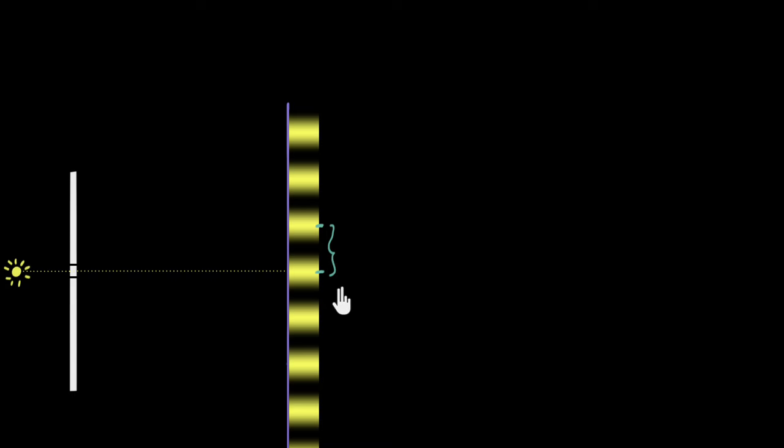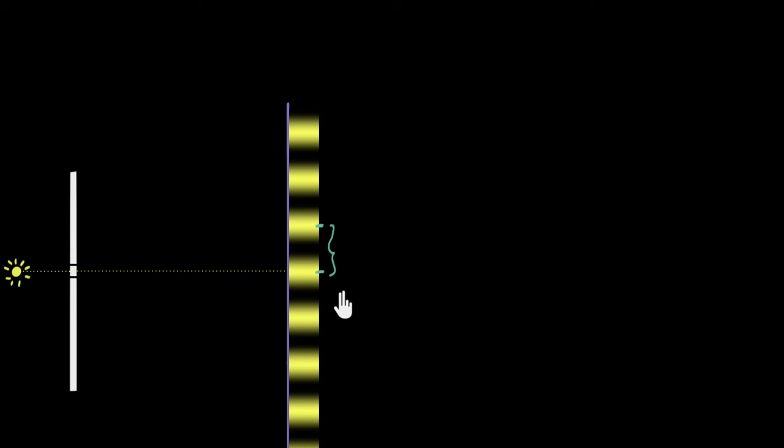We want to figure out what is the expression for this distance. One reason is because this is in our syllabus, but more importantly, we will see by figuring out this expression how Young — Thomas Young — was able to find the wavelength of light. By using a piece of cardboard, a candle, and a screen, he was able to figure out the wavelength of light, and we'll understand exactly how he did that.